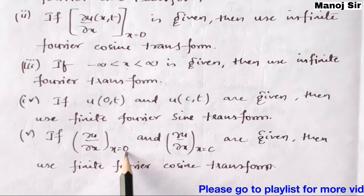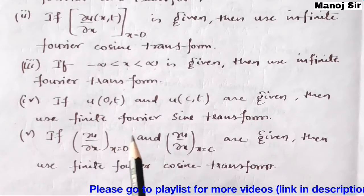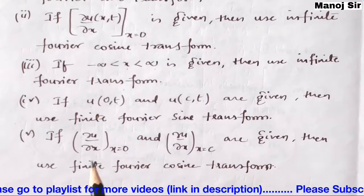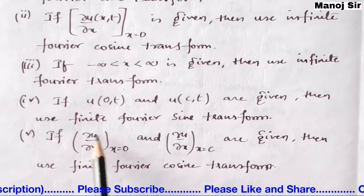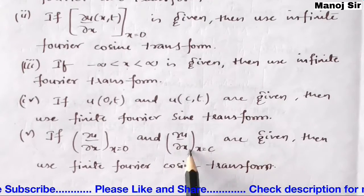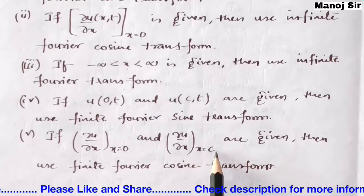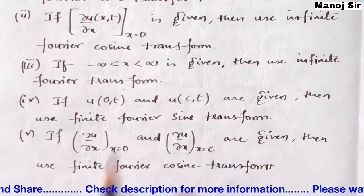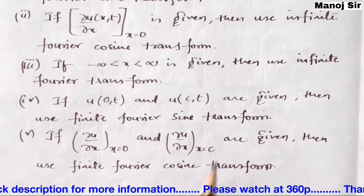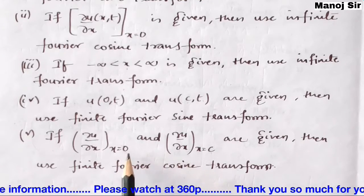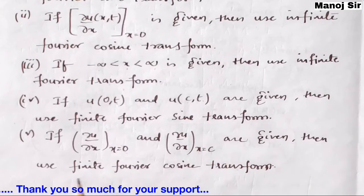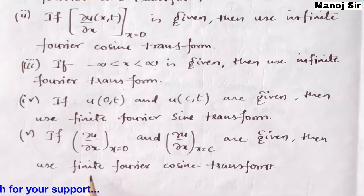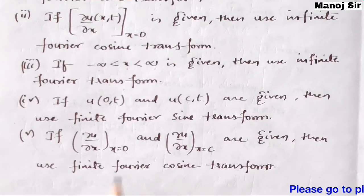The fifth point: if ∂u/∂x at x = 0 is given, and ∂u/∂x at x = C is also given — again with x ranging from 0 to C — then we are going to use the finite Fourier cosine transform.